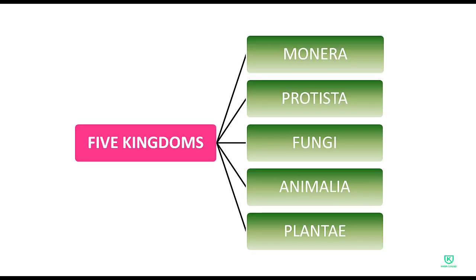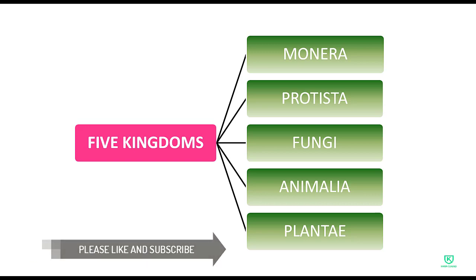In this chapter we have to learn five kingdoms. These five kingdoms are: Monera, Protista, Fungi, Animalia, and Plantae. These five kingdoms were discovered or suggested by R.H. Whittaker.